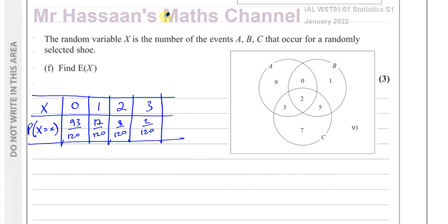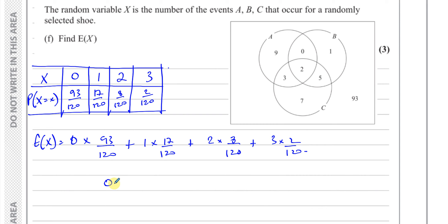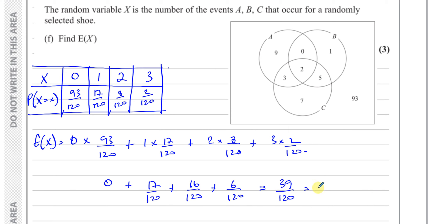To find the expected value E(X), multiply each value of X by its probability and add them together: 0×(93/120) + 1×(17/120) + 2×(8/120) + 3×(2/120). That gives 0 + 17/120 + 16/120 + 6/120 = 39/120. Dividing both by 3 gives 13/40. So the expected value of X is 13/40.